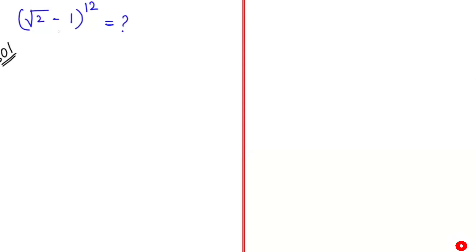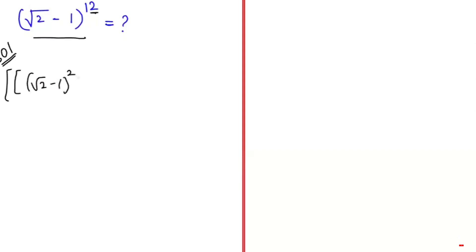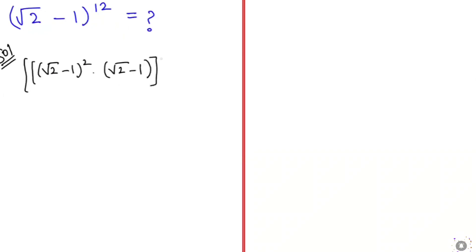First, I'm going to write this expression by splitting the power. I'm going to write it as [(√2 - 1)² × (√2 - 1)]², and whole to the power of 2. Here, since the bases are multiplied the powers are added: 2 + 1 = 3, then 3 × 2 = 6, and 6 × 2 = 12.